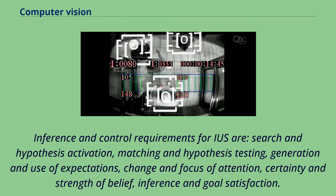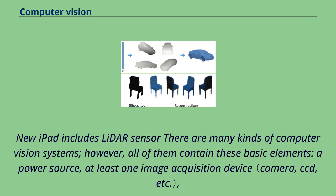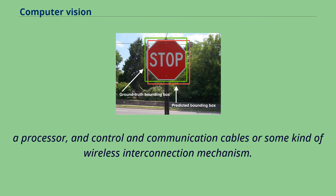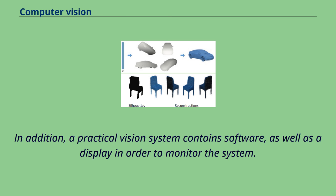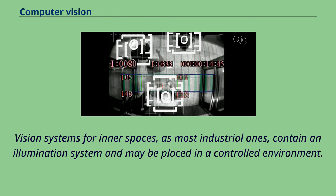All computer vision systems contain these basic elements: a power source, at least one image acquisition device, a processor, and control and communication cables or some kind of wireless interconnection mechanism. In addition, a practical vision system contains software as well as a display in order to monitor the system. Vision systems for inner spaces, as most industrial ones, contain an illumination system and may be placed in a controlled environment. A completed system includes many accessories such as camera supports, cables and connectors.